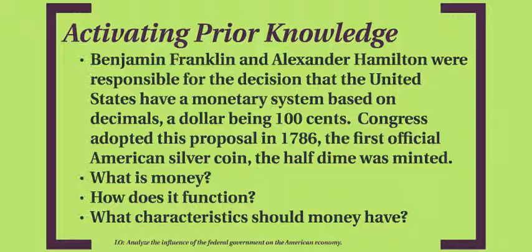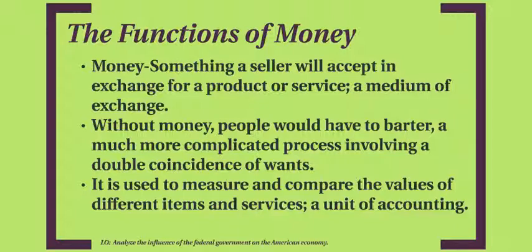What is money? How does money function? What characteristics should money have? The functions of money: money is something that a seller will accept in exchange for a product or service. In other words, it serves as a medium of exchange. Without money, people would have to barter — a much more complicated process involving a double coincidence of wants, meaning I have to have something they want in order to trade. It is also used to measure and compare the values of different items and services — in other words, it is used as a unit of accounting.